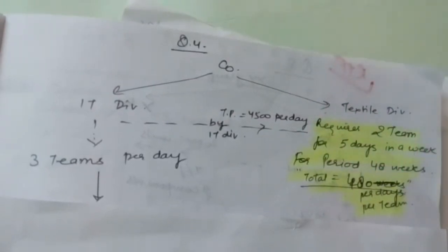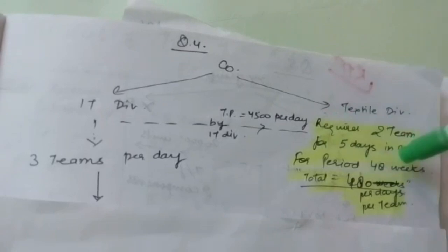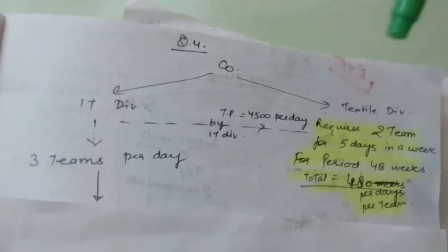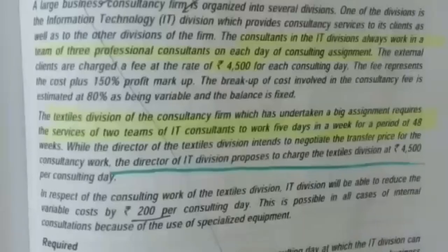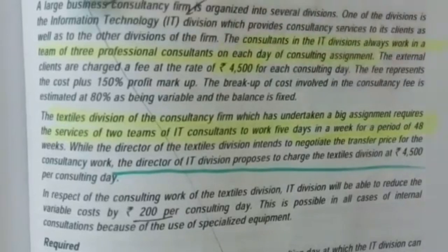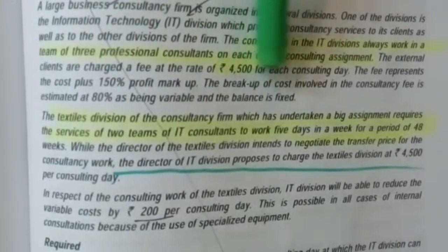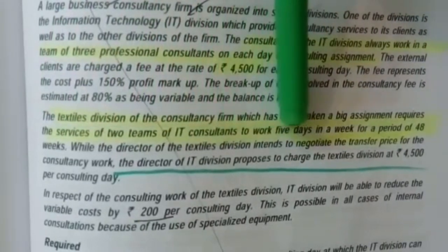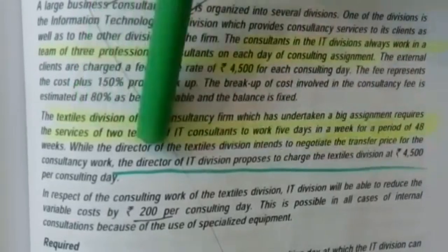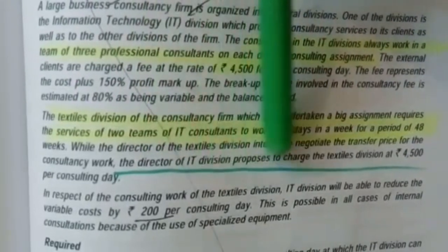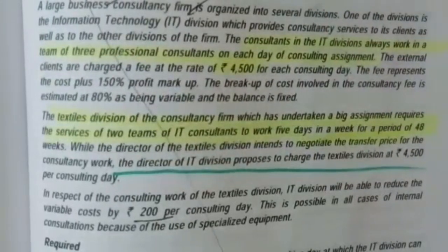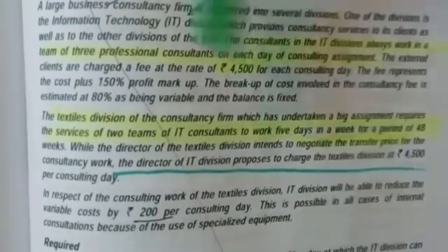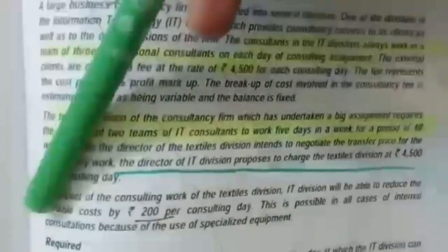As given in the question, consultants in IT Division always work in a team of 3 professionals and they charge $4,500 for each consulting day. The Textile Division needs these teams for 5 days a week for 48 weeks. IT Division charges $4,500 per consulting day from outside clients. However, when transferring internally, the IT Division will be able to reduce the variable cost by $200 per consulting day. So we will use variable cost less $200 when computing the transfer price.